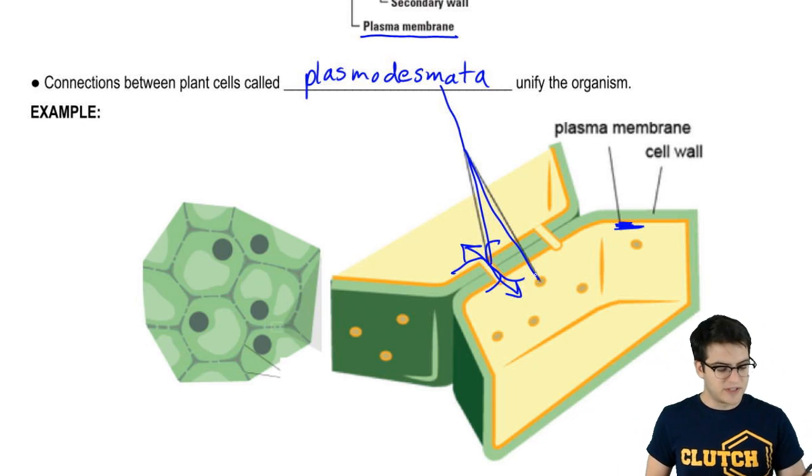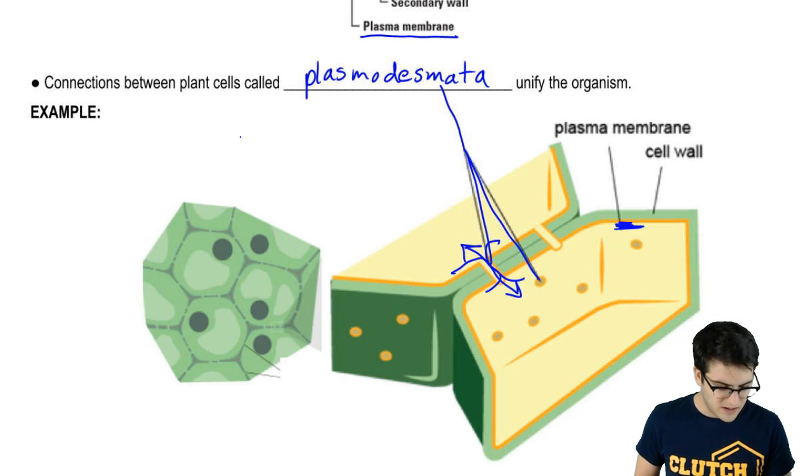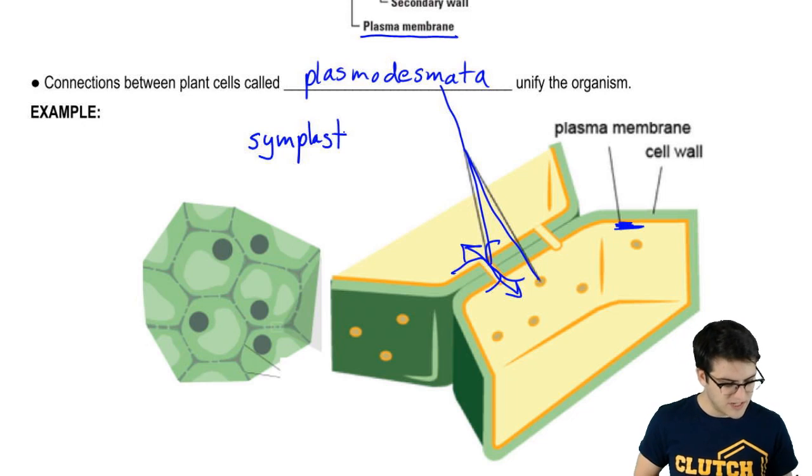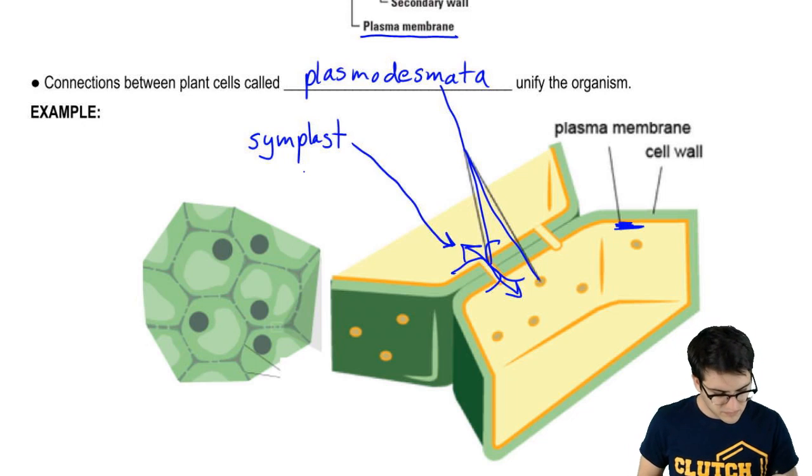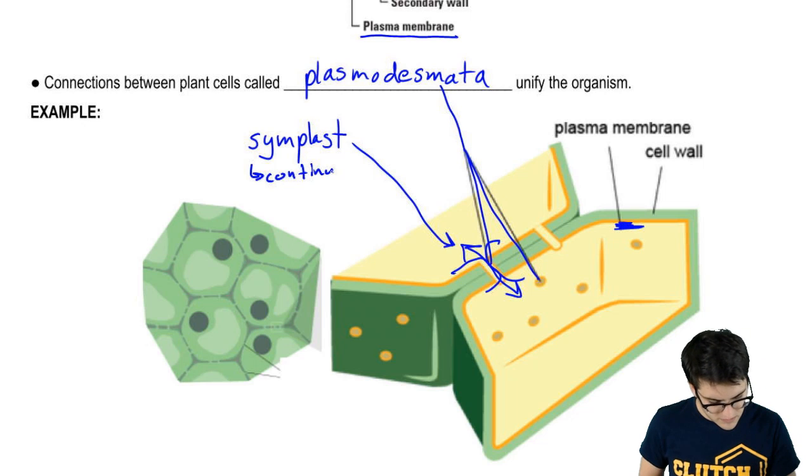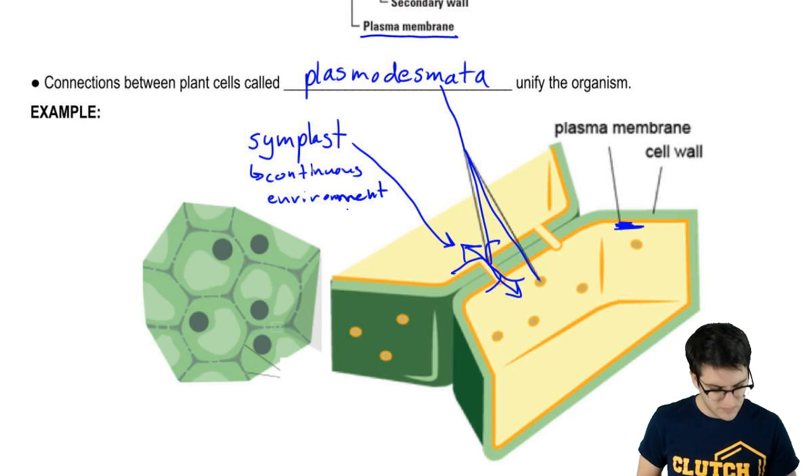Now, this continuous environment is called the symplast. So, symplast is the continuous environment between the plasmodesmata.